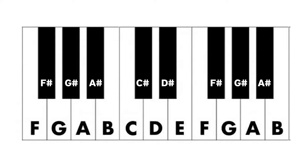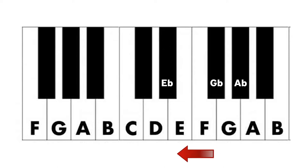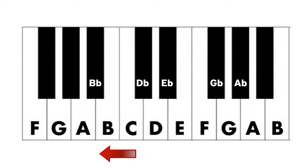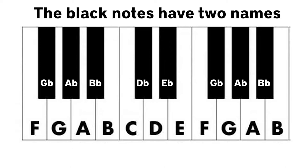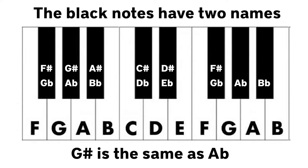All those notes in between the white keys are your sharps and your flats. I like to think about sharps when going up: A, A sharp, B, C, C sharp, D, D sharp, E, F, F sharp, G, G sharp. Flats on the other hand I like to think about going down: A, A flat, G, G flat, F, E, E flat, D, D flat, C, B, B flat.